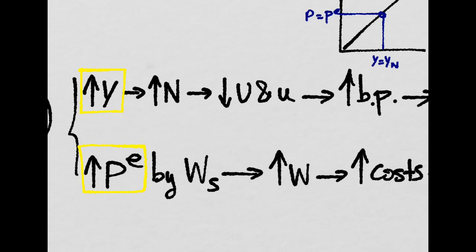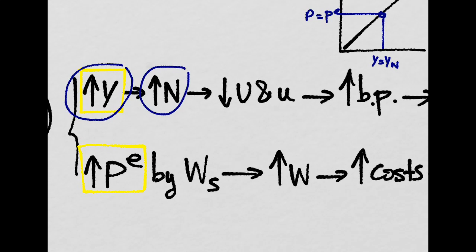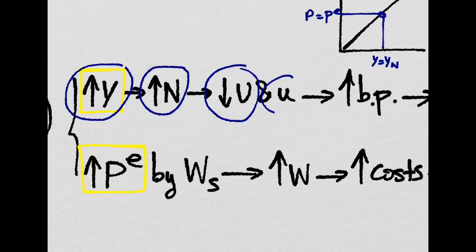And for example, if we have an increase in output, that would increase the employment level in the economy, which of course will decrease the unemployment level in the economy and also the unemployment rate.